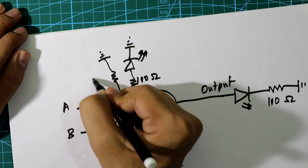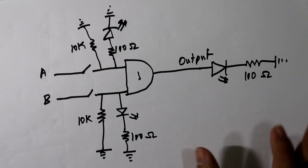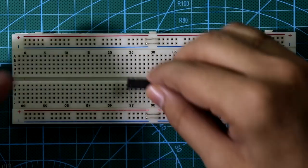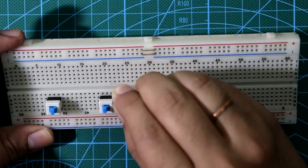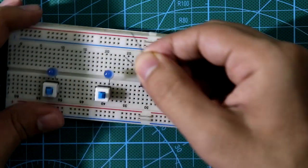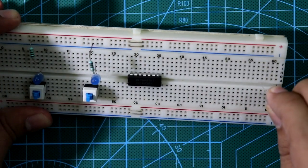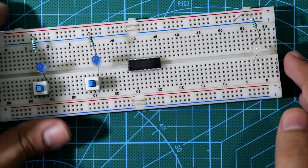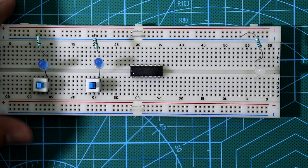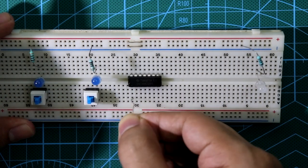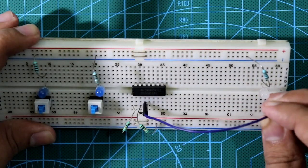We also have to connect a pull-down resistor to both inputs, connected to ground, with a value of 10 kilo ohms each. So in the breadboard we place the IC, two switches, input LEDs connected through 100 ohm resistors to ground, and the output LED through a 100 ohm resistor to ground. Pull-down resistors go on the input pins, and pin number 3 is connected to the output LED.